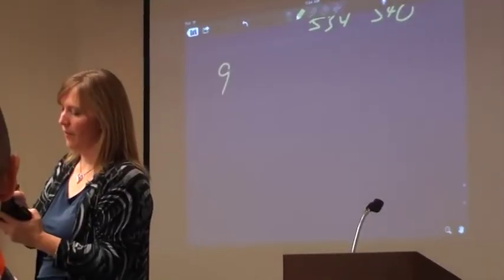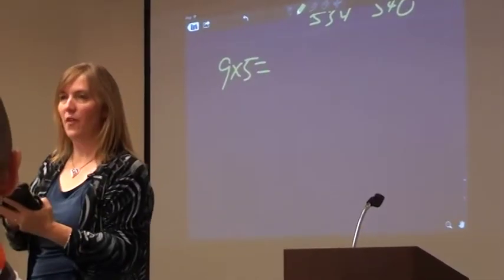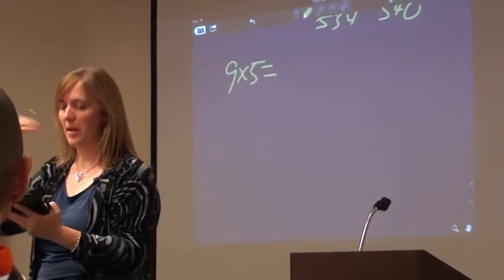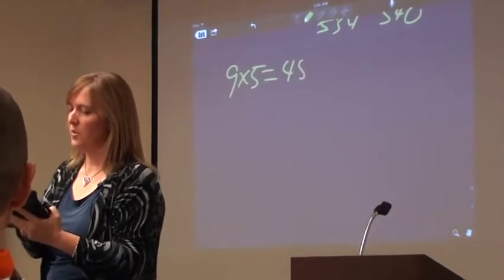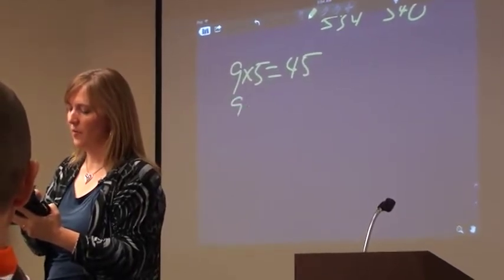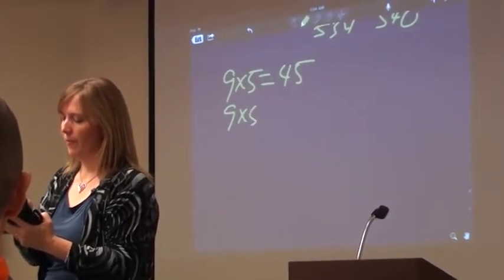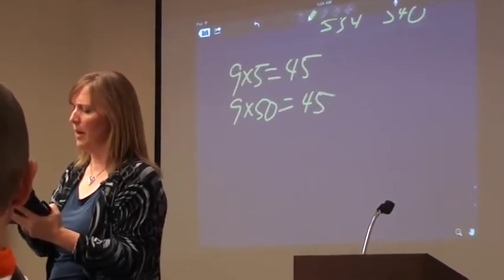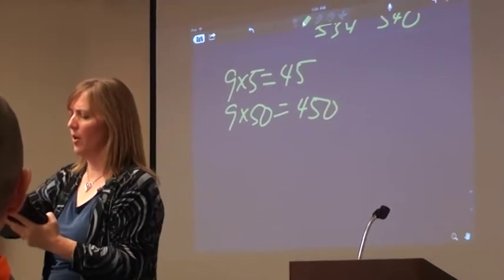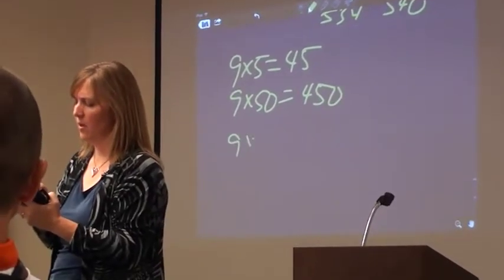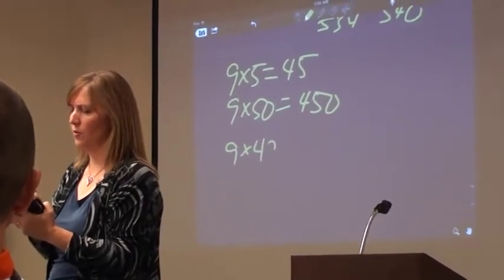That's an example of using numeracy in relationships to solve the problem. Let's do another one. What if I were to ask you for 9 times 5? 9 times 5 is... everybody? 45. So what comes next? What's 9 times 50? 450. We can talk about how you do that, but we're not going to get into that at the moment. What's then 9 times 49? Don't say it out loud.